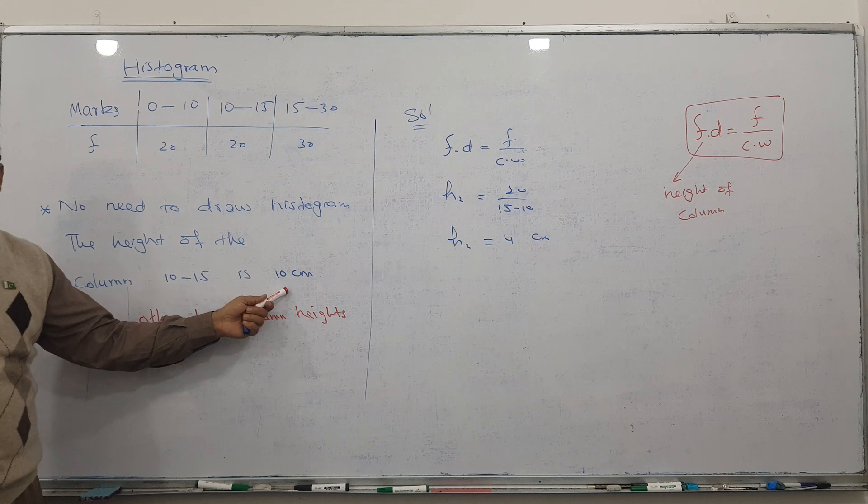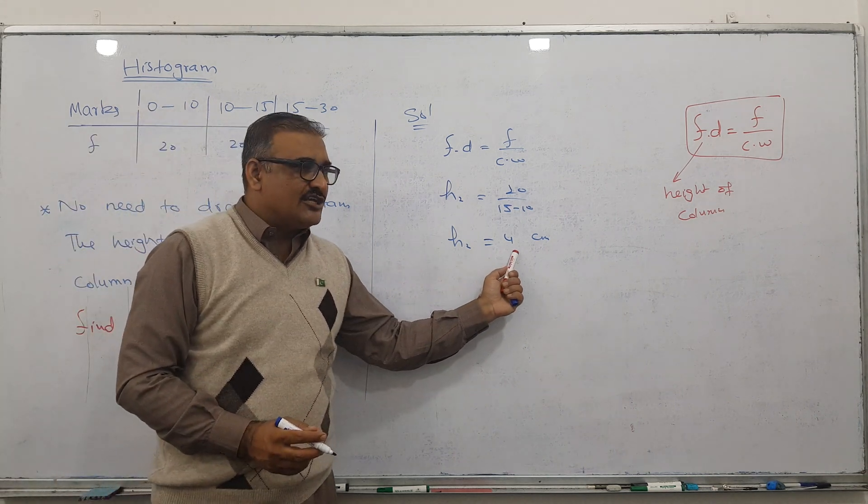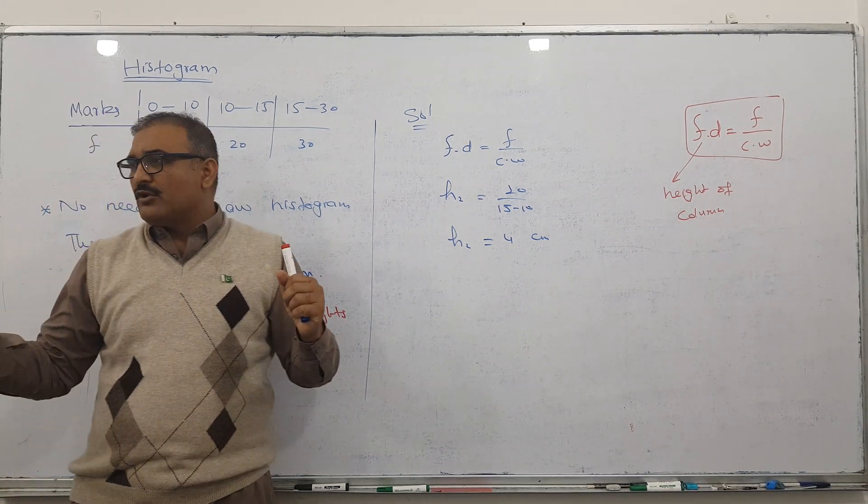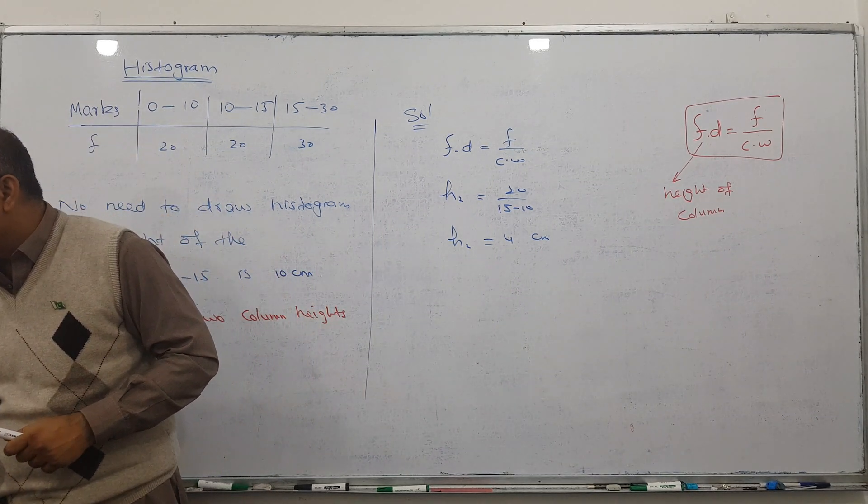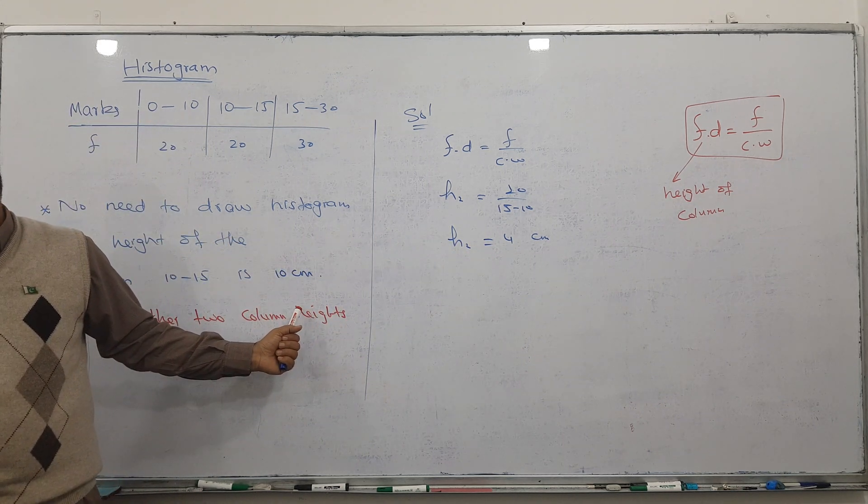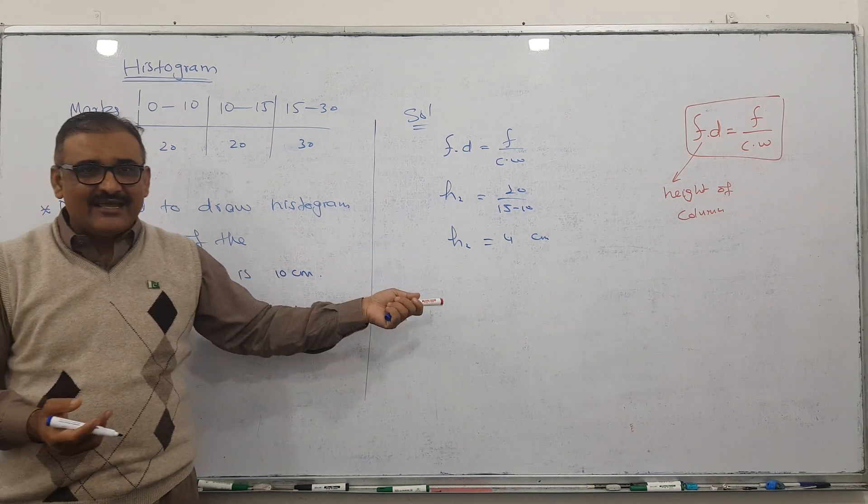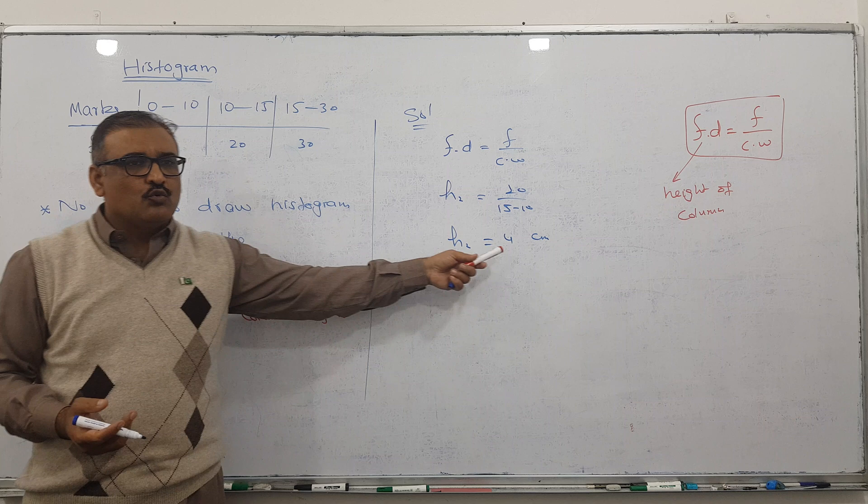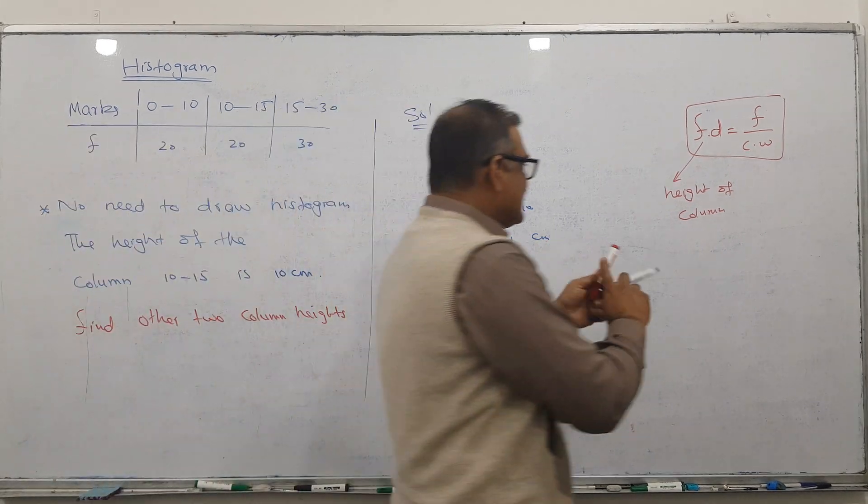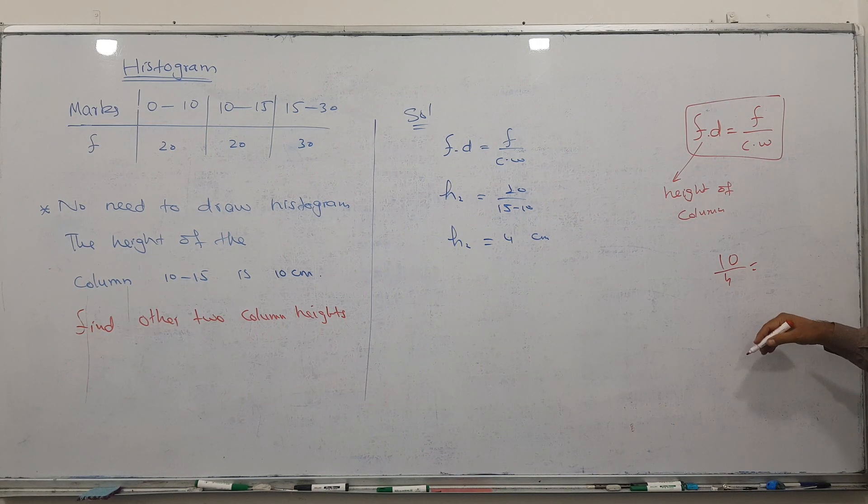So height 2 is coming as 4 centimeters, but he said the height is 10 centimeters. You will check that naturally your answer is smaller, his answer is bigger. So when you go from smaller to bigger, we have to multiply. Naturally, 4 times what number gives 10? We have two techniques.